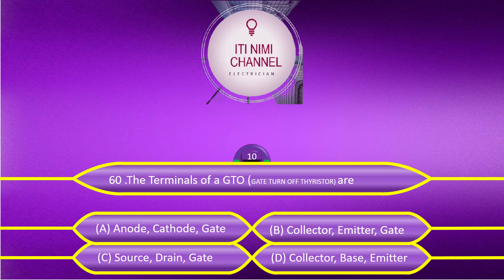The terminals of a GTO (gate turn-off thyristor) are: Option A, anode, cathode, gate. Option B, collector, emitter, gate. Option C, source, drain, gate.